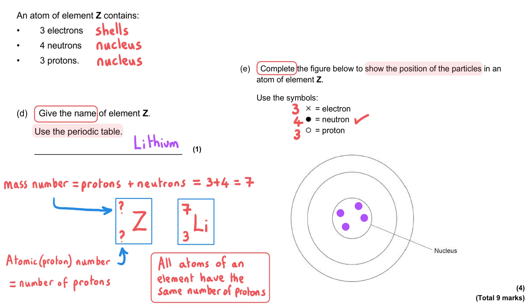And then we need to put three protons also into the nucleus as three circles that are not filled in. And that gets us our second mark. For the third mark, we need to put three electrons shown as crosses somewhere into the shells. They're showing us two shells here, which actually is really helpful.